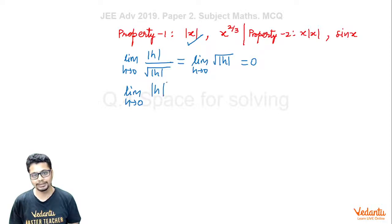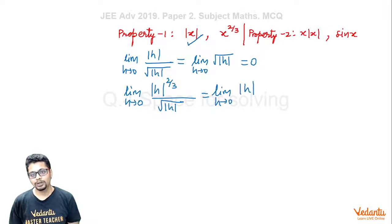f(0) is clearly 0. So it becomes lim(h→0) |h|^(2/3) / √|h| = lim(h→0) |h|^(2/3 - 1/2) = lim(h→0) |h|^(1/6). Again, the limit exists and is finite, equal to 0. So this function also has Property 1.